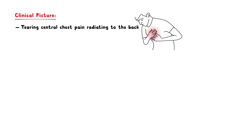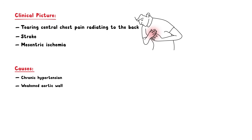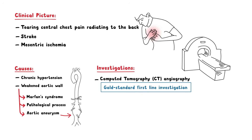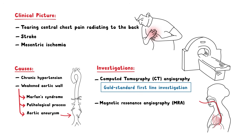Other symptoms arise due to decreased blood supply to other organs, such as stroke or mesenteric ischemia. Other causes of aortic dissection include chronic hypertension; a weakened aortic wall can be due to Marfan syndrome or an aortic aneurysm. The current gold standard first-line investigation for an aortic dissection is a CT angiogram; however, MRI angiogram (MRA) and transesophageal echocardiogram can also be used.